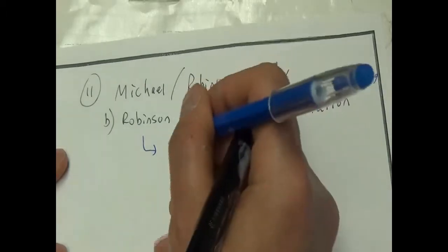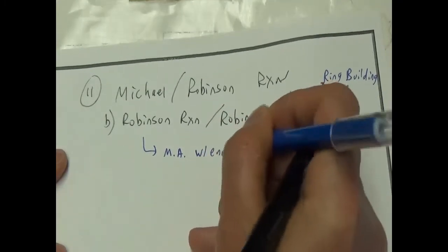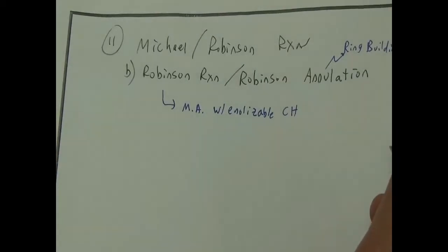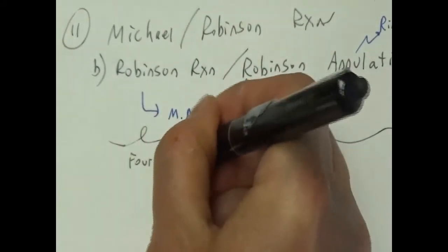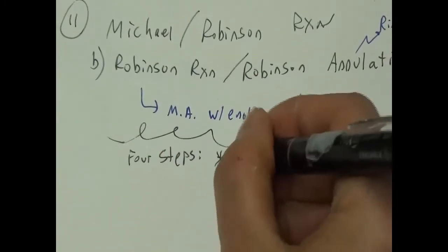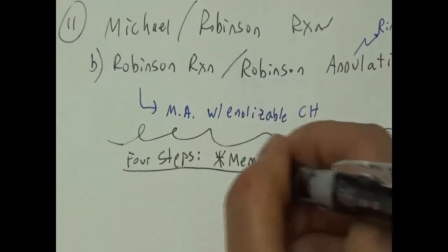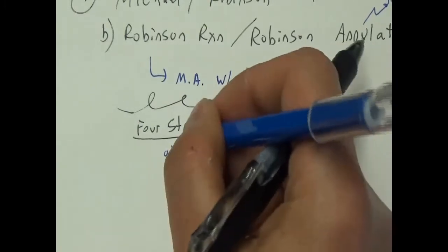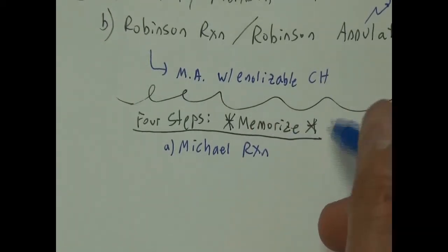The key requirement for the Robinson is that you have a Michael acceptor with an enolizable CH. There are four steps. If you use index cards, this is probably a good index card — I suggest you memorize this sequence. I give them letters: step A is going to be a Michael reaction — we know what the Michael reaction is, it's just a 1,4-addition with an enolate.